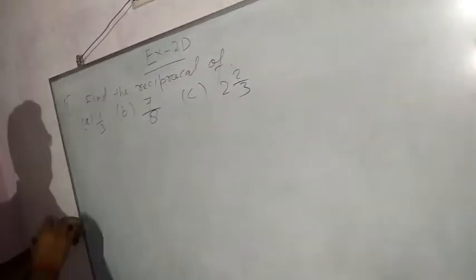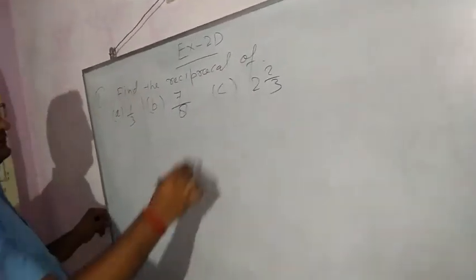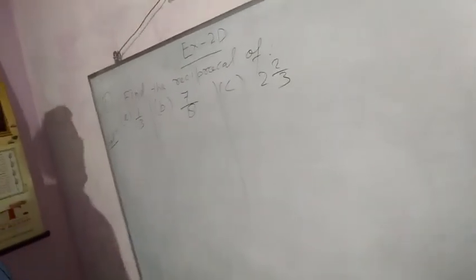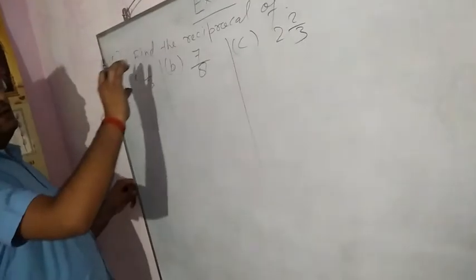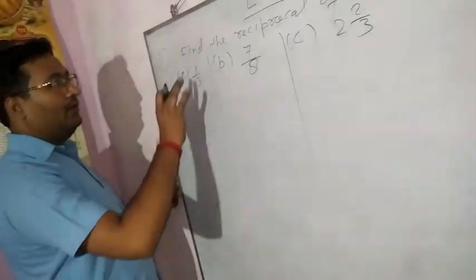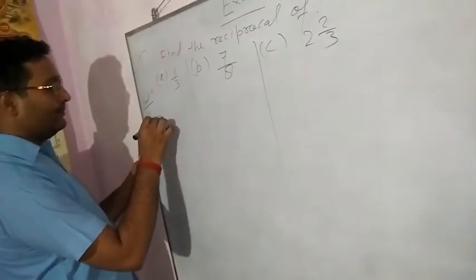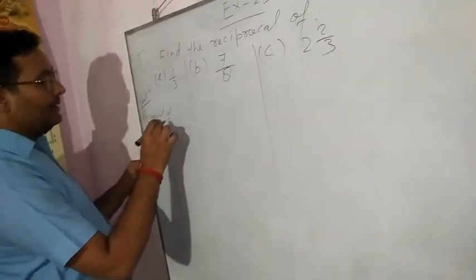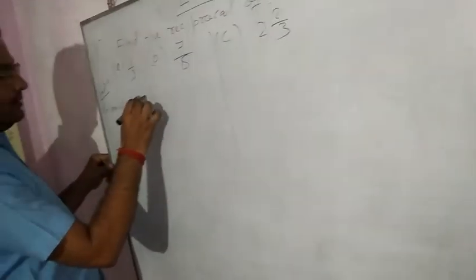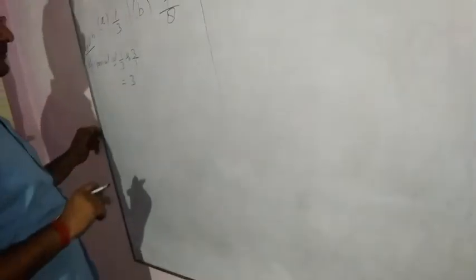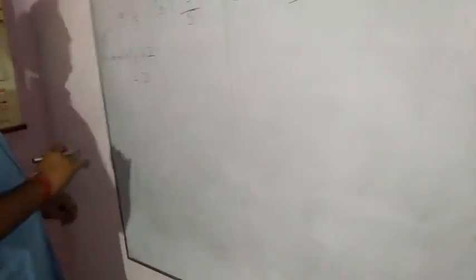Now solution. So listen. A: reciprocal of 1/3 is 3/1, that means 3 only. Okay. That means you have to change the numerator to denominator and denominator to numerator.